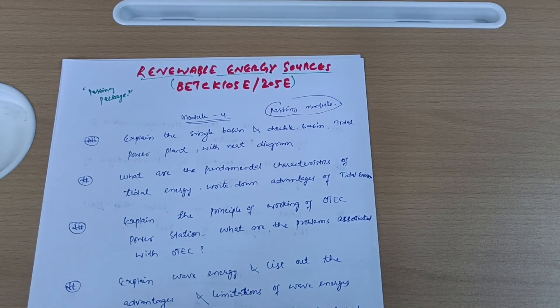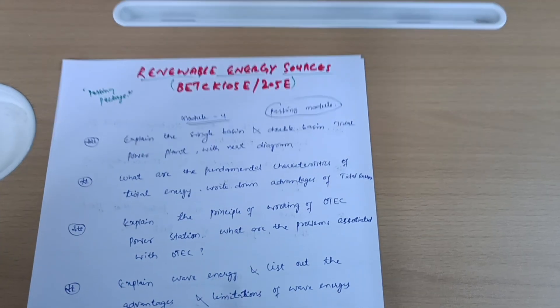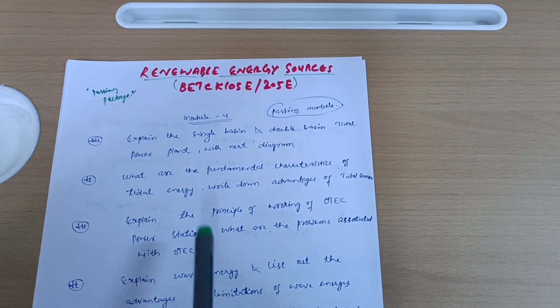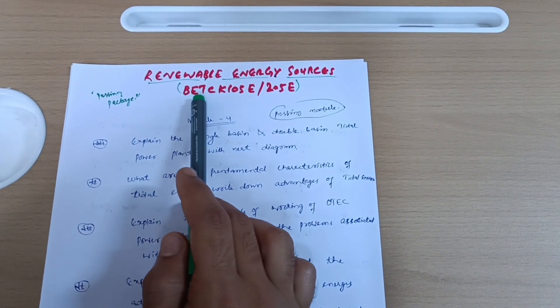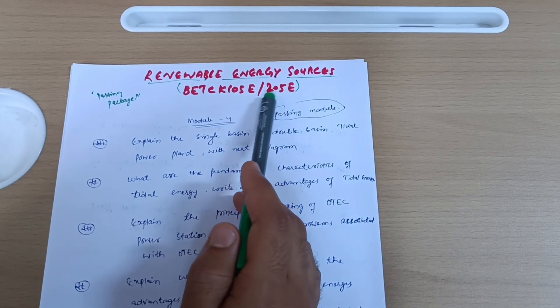Dear second semester students, welcome back to my another video. Hope you are all doing well. In this video I will discuss the important questions and passing modules of renewable energy sources, subject code BETCK105E or 205E.